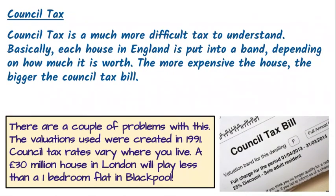Council tax is a bit more difficult to understand. Basically, each house in England is put into a band depending on how much it is worth — the more expensive the house, the bigger the council tax bill. The valuations were carried out quite some time ago when council tax was first created back in 1991. For new houses, they have to estimate what the house would have been worth in 1991 to place it in the correct band. Council tax also varies by location — strangely enough, a £30 million house in Kensington and Chelsea, London, will pay less council tax than a one-bedroom flat in Blackpool.